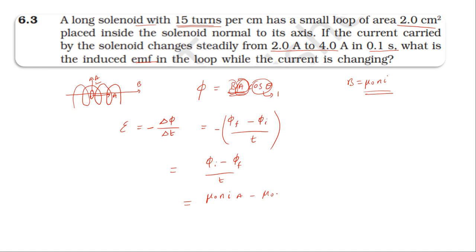EMF = μ₀n·A·I_initial minus μ₀n·A·I_final, divided by time. Taking μ₀nA as common: EMF = μ₀nA(I_initial - I_final)/t.